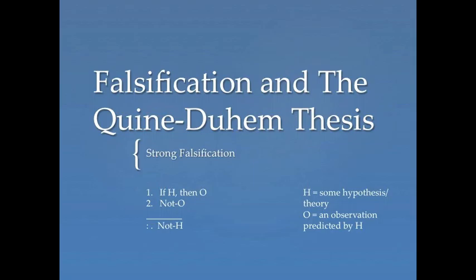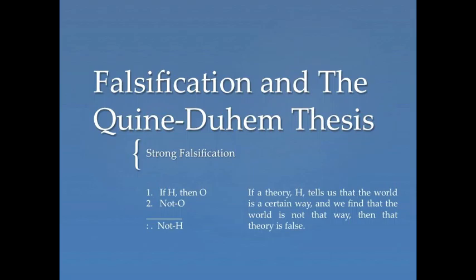In the previous lecture, I talked about how this gives us some reason for thinking that H isn't true, but strong falsification makes a stronger claim—it tells us that H is false. H is some hypothesis or theory, and O is an observation predicted by H. If theory H tells us that the world is a certain way, and we find that the world is not that way, then that theory must be false, according to strong falsification.